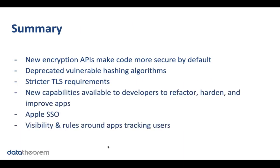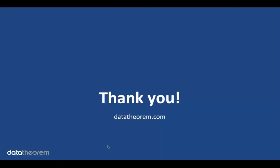In summary, with iOS 13 Apple has introduced new encryption APIs which make code more secure by default and make it easier to securely encrypt data. Apple has explicitly discouraged vulnerable hashing algorithms, introduced stricter requirements for network connections, added new capabilities for developers to make apps more resilient to data loss, added a new single sign-on service which protects user privacy, and provided more visibility and rules around tracking users. That's all — thank you.